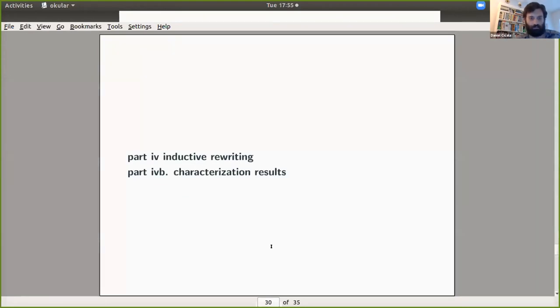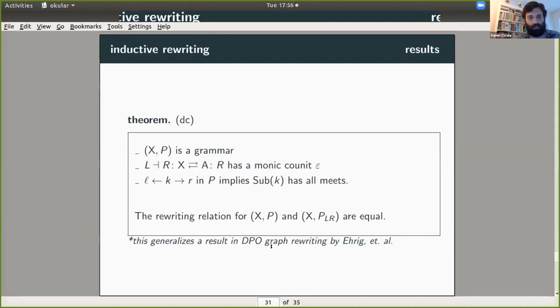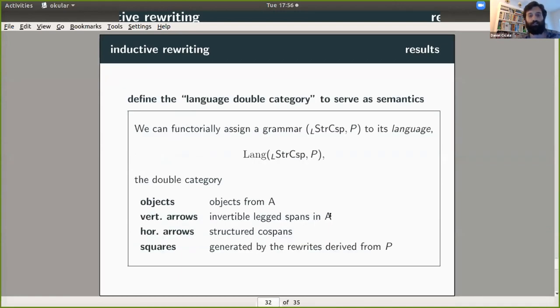So now I can kind of fly through these last few slides just to give you the characterization results. So one thing is that if we have a grammar on closed systems and we have this discrete grammar, then these are equally as expressive. Right. So the rewriting relation for both of them are the same. Okay.